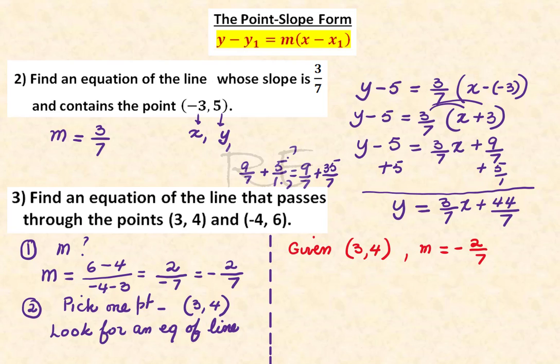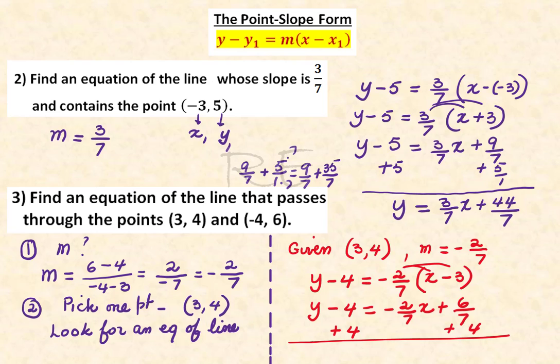So y minus y₁, which is 4, is equal to m, negative 2 over 7, times x minus x₁, which is 3. We need to distribute negative 2 over 7 to x minus 3. So it's negative 2 over 7 times x plus 6 over 7. We're going to add 4 to both sides.